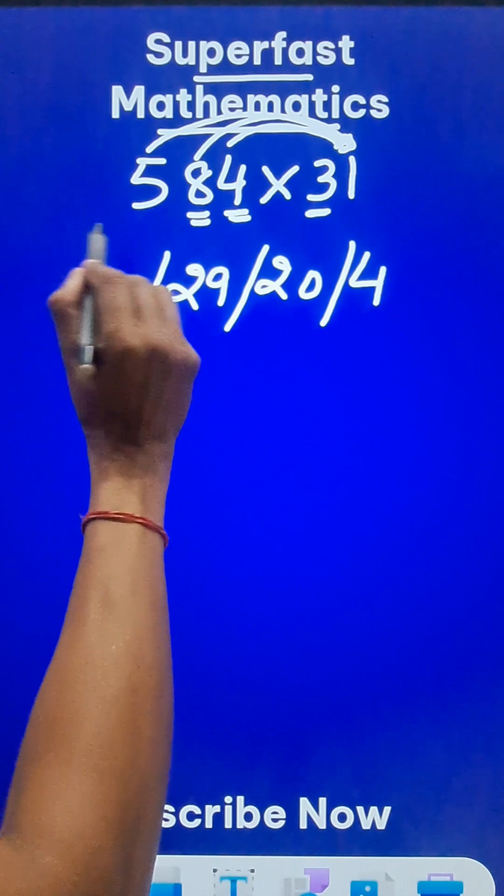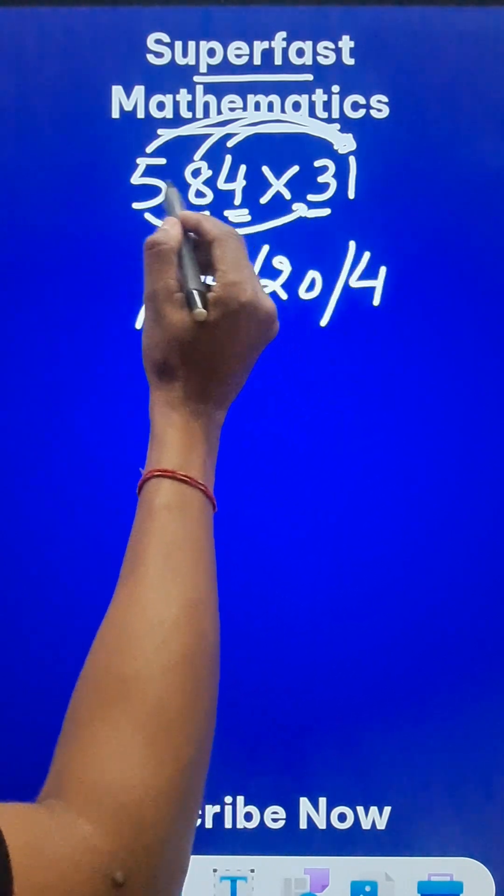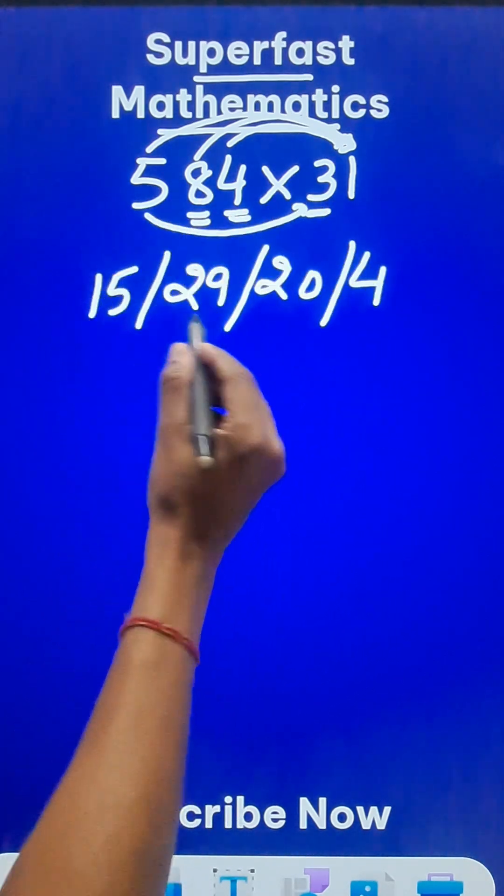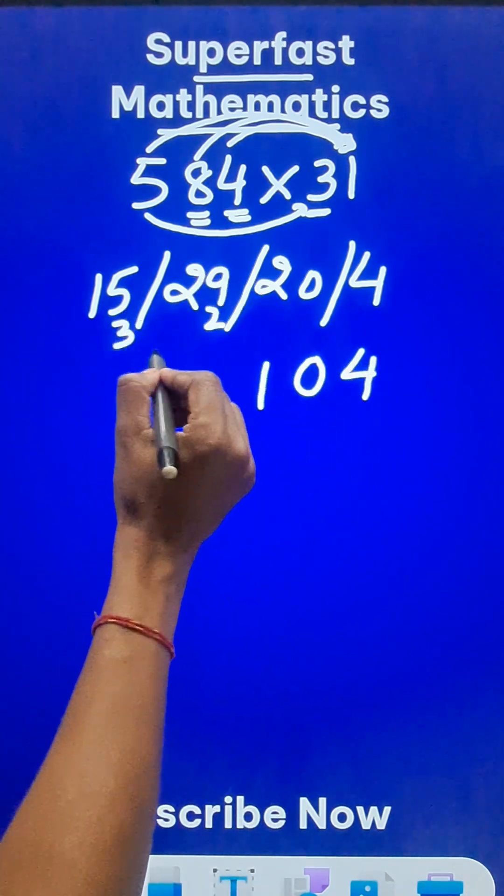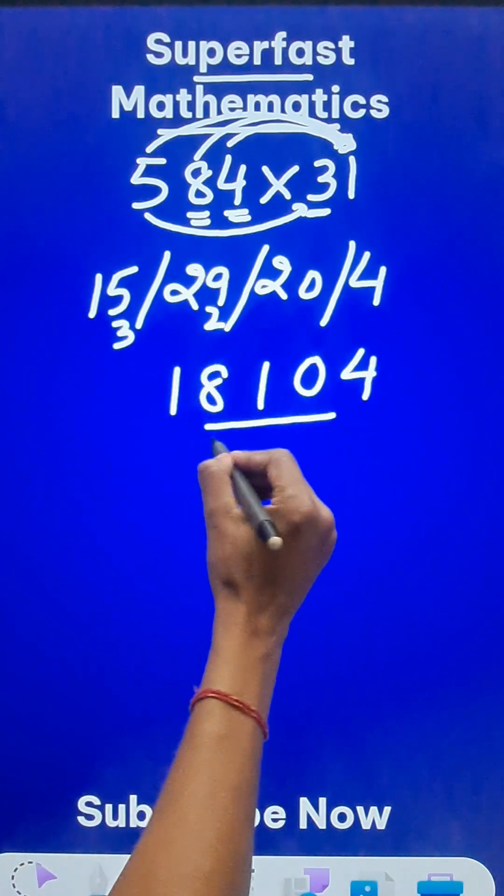And finally, the last thing you have to do is multiply this by 3. That gives us 15. Now start writing from the unit digit 4. 20 means 0 and a 2 carry. 31 means 1 and a 3 carry. 15 plus 3 gives us 18. And here you have the answer.